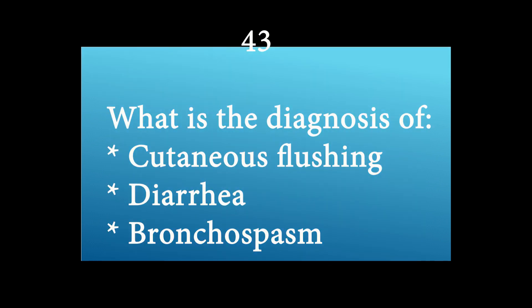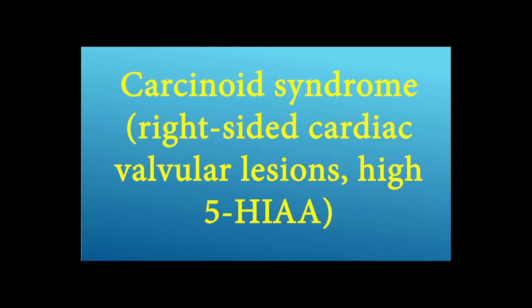What is the diagnosis of these signs and symptoms? Cutaneous flushing, diarrhea, and bronchospasm. The answer is carcinoid syndrome — with right-sided cardiac valvular lesions and high 5-hydroxyindoleacetic acid.